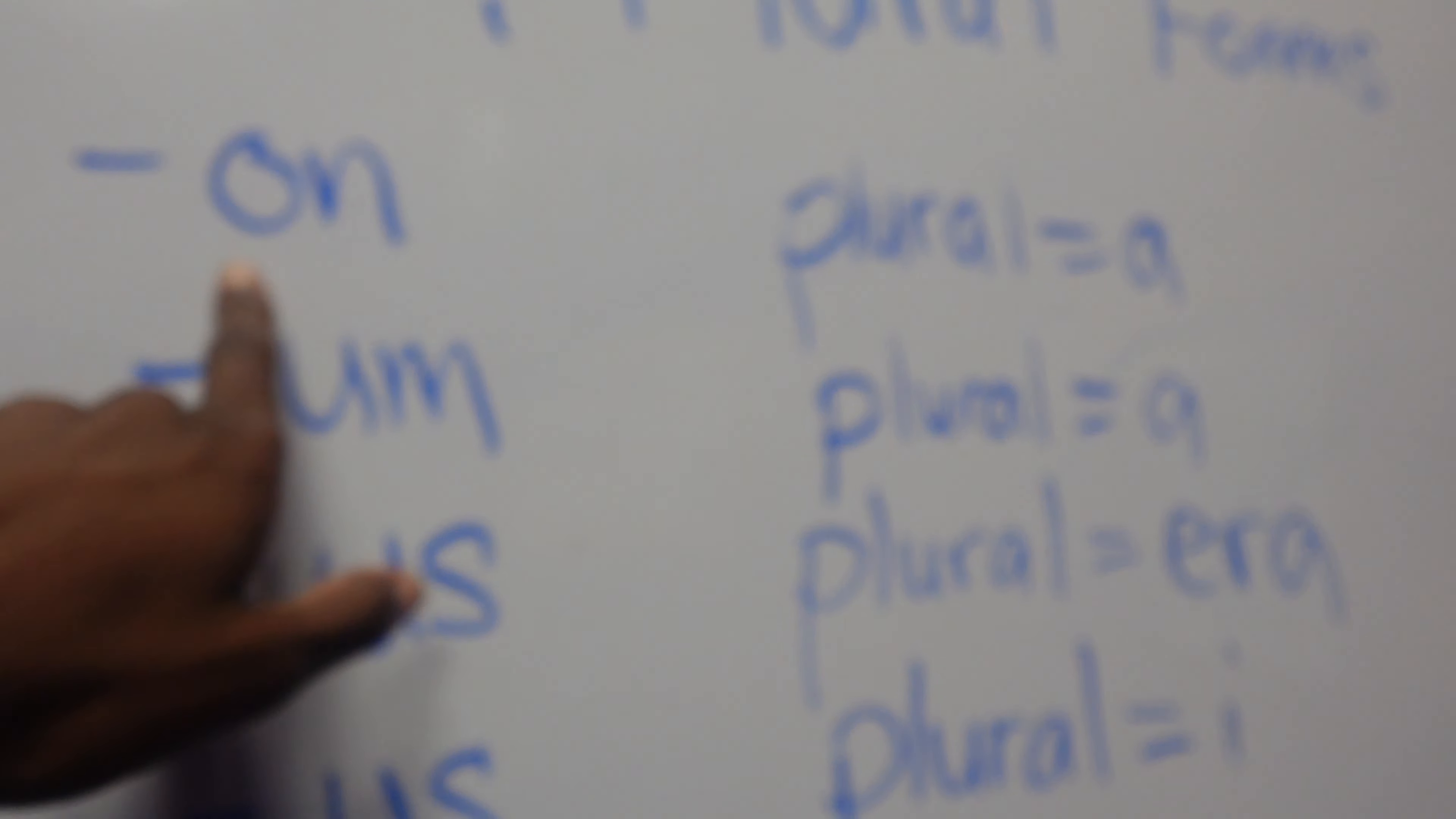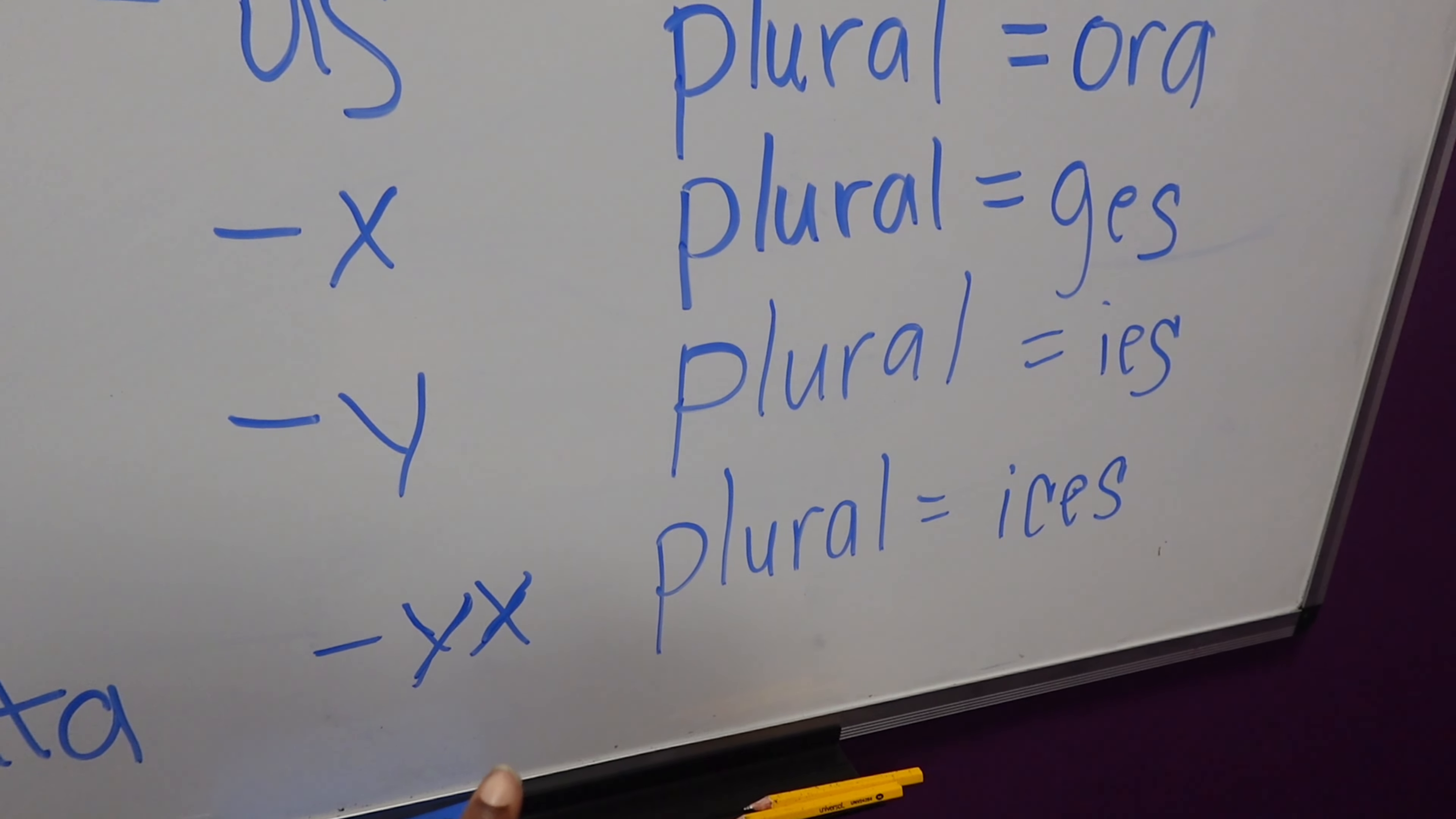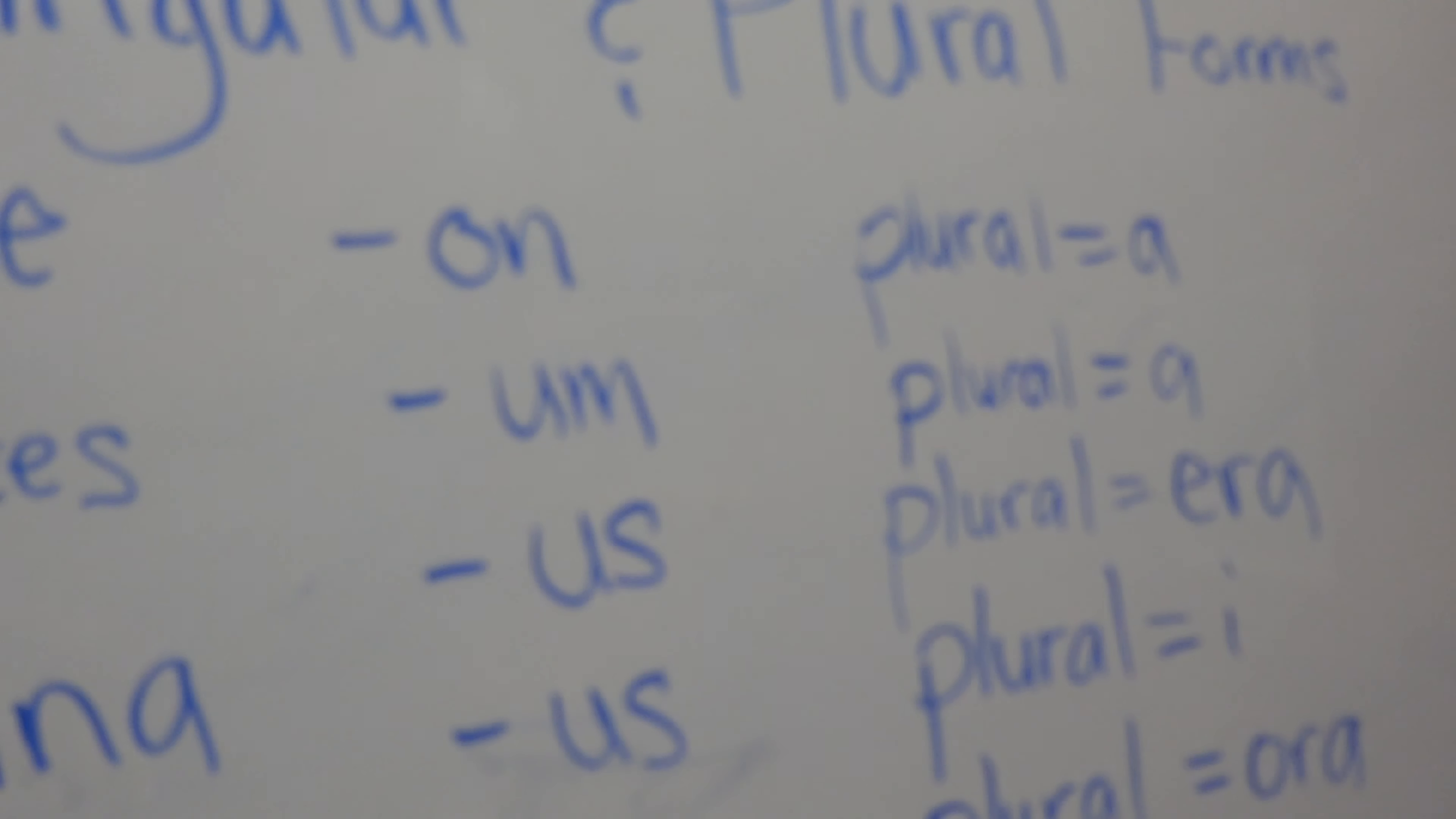So if it was, for example, ganglion for the singular, the plural would be ganglia. If UM was the suffix, the plural of that suffix would be A, and so forth with the rest of these. This is going to help me remember the medical terms, because most medical terms end in these popular suffixes. So I just wrote it down and it's going to help me remember, especially for the midterm.